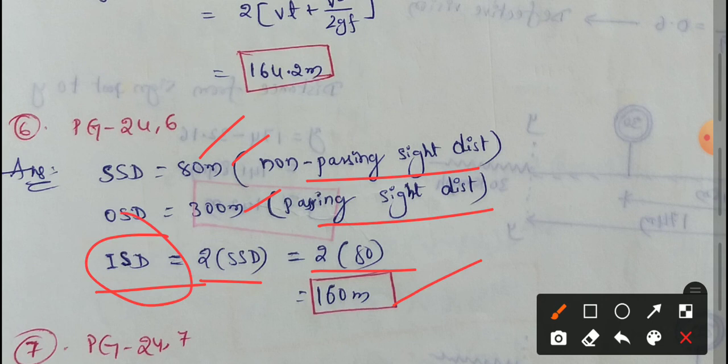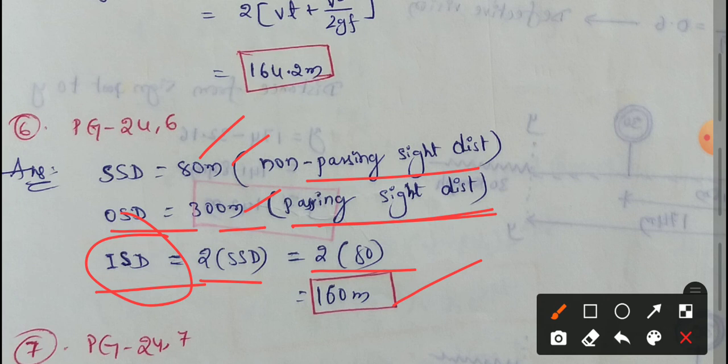There is a lot of confusion here regarding the direction of OSD. The Passing Side Distance value is 300 meters. If you like this video, please like my video and don't forget to subscribe to my channel.